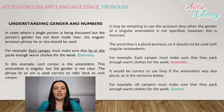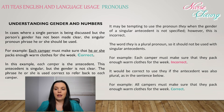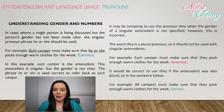It may be tempting to use the pronoun 'they' when the gender of a singular antecedent is not specified; however, this is incorrect. The word 'they' is a plural pronoun, so it should not be used with singular antecedents. For example: Each camper must make sure that they pack enough warm clothes for the week — this is incorrect. It would be correct to use 'they' if the antecedent was also plural: All campers must make sure that they pack enough warm clothing for the week. This is correct.